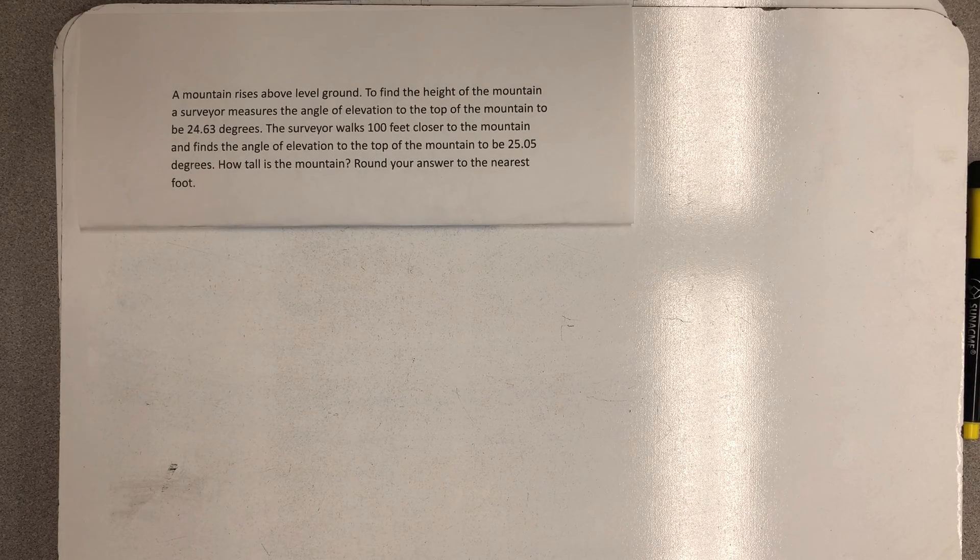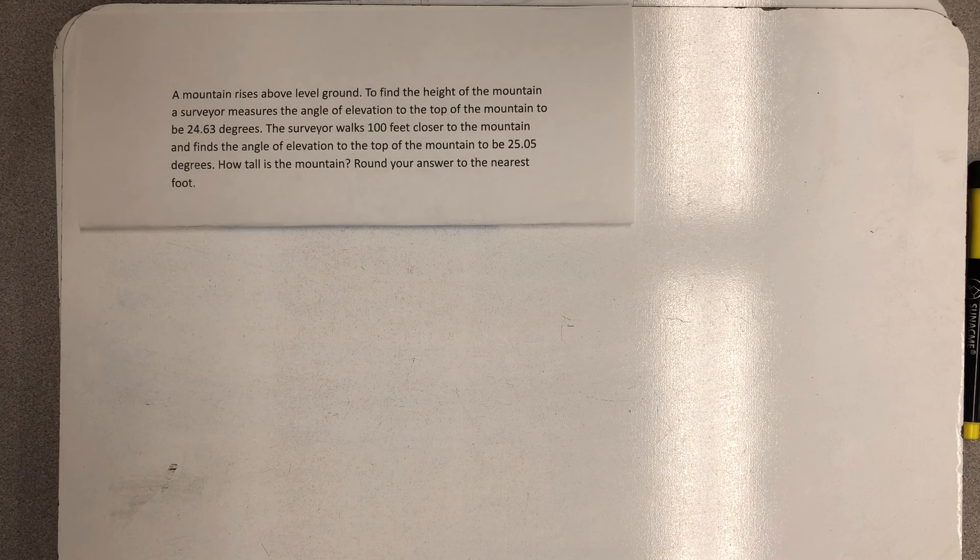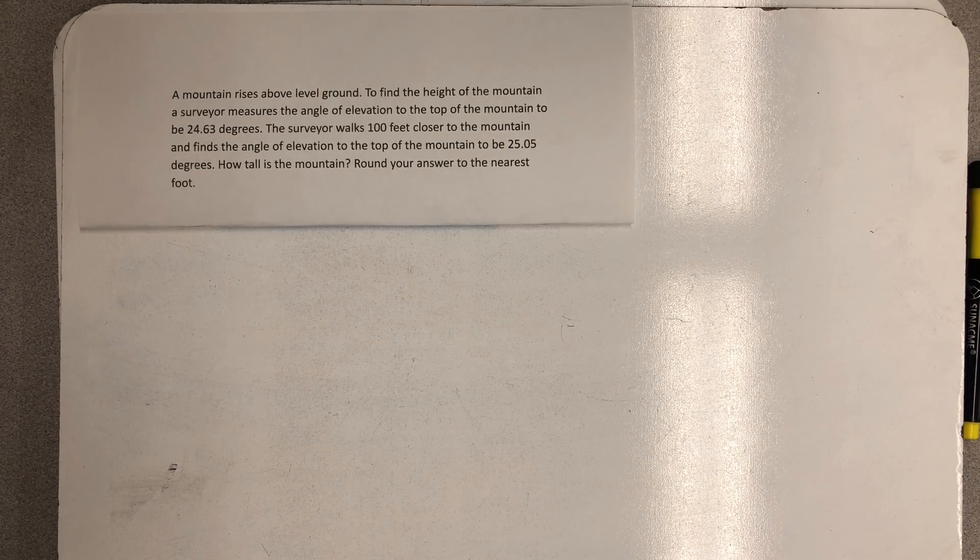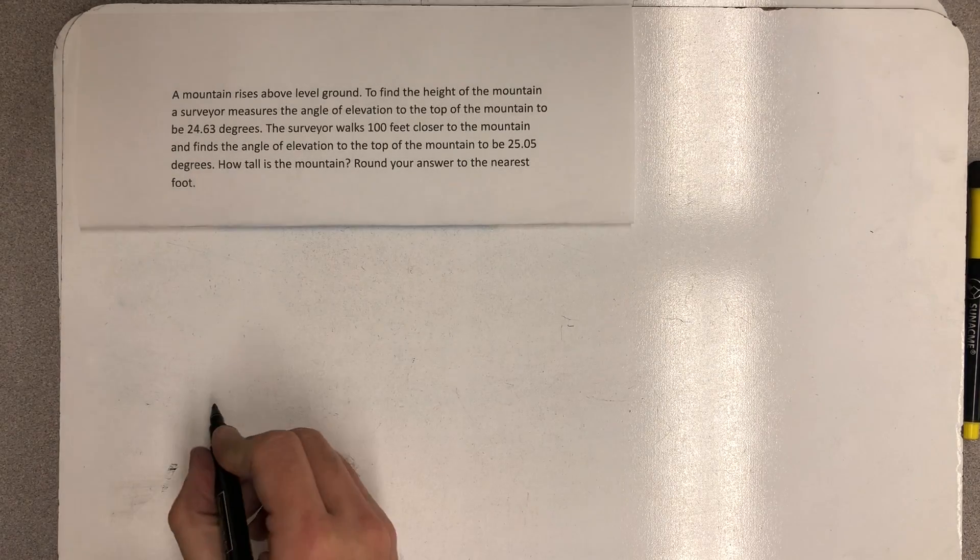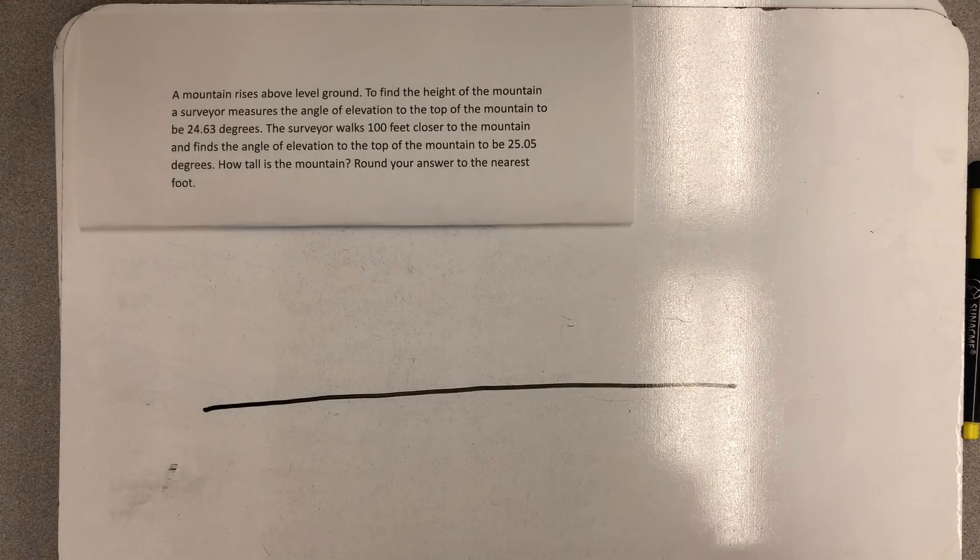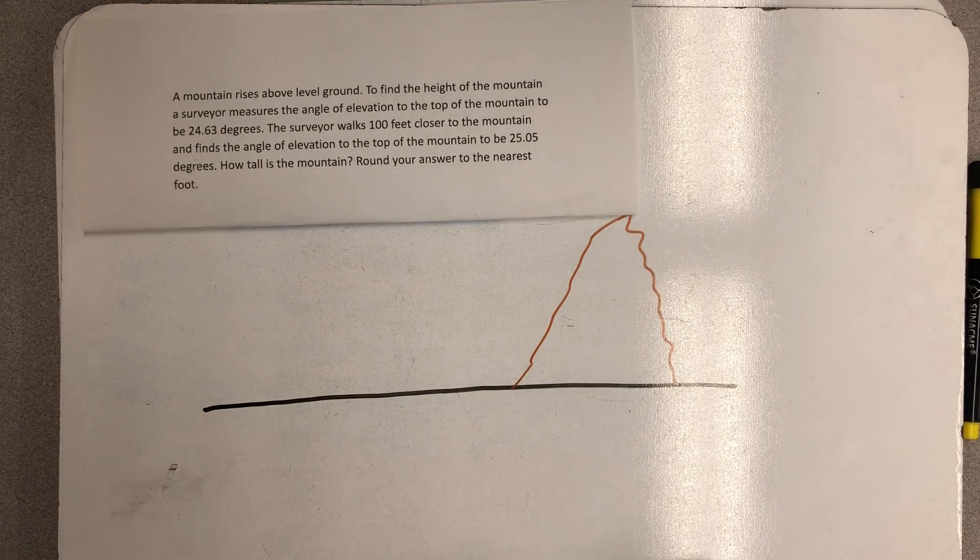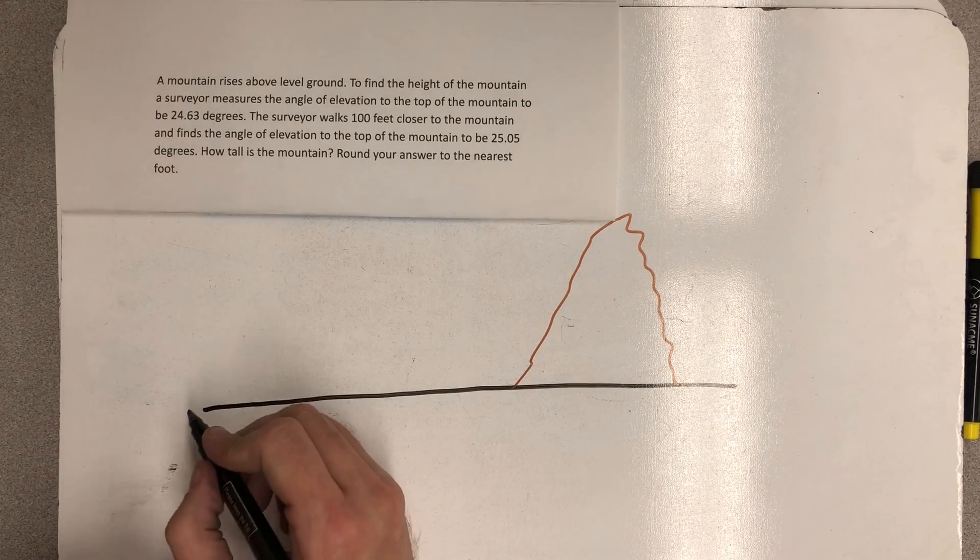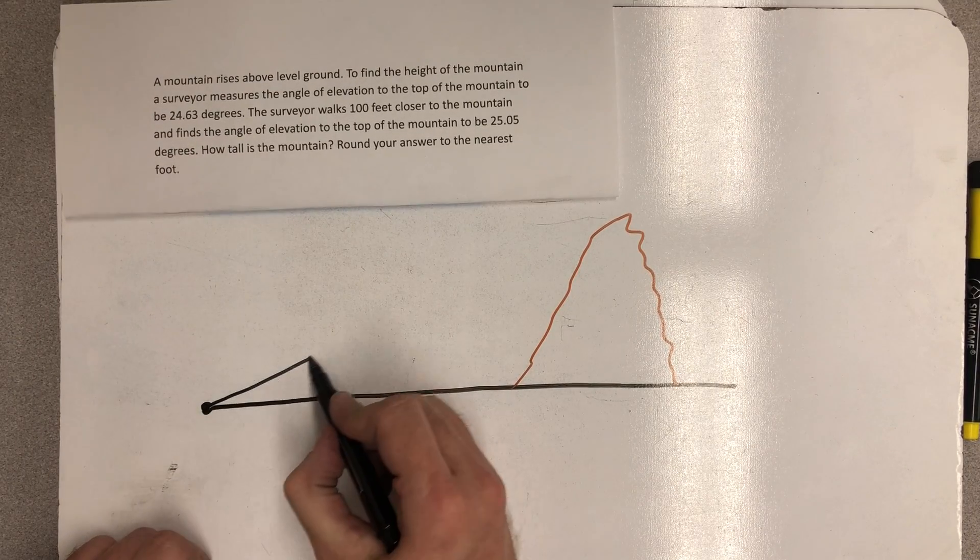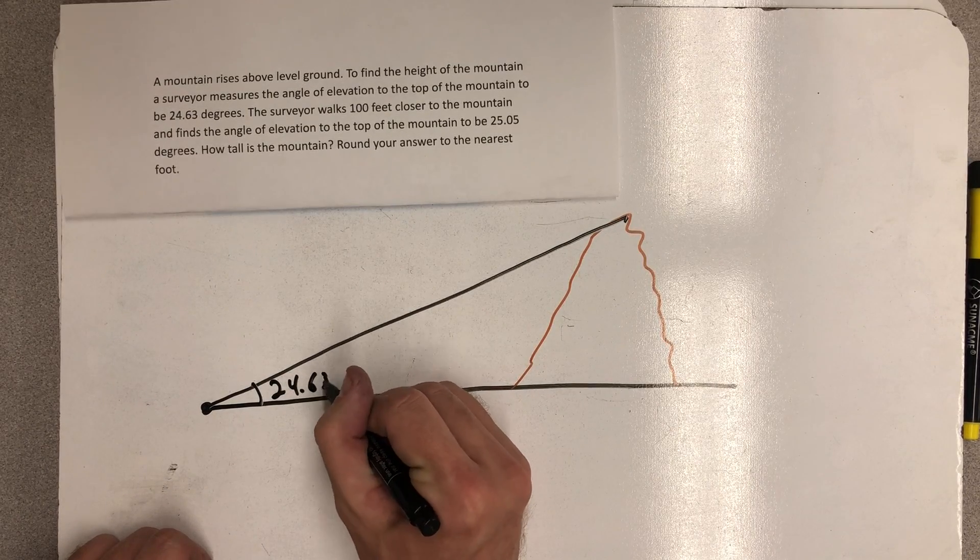A mountain rises above level ground. To find the height of the mountain, a surveyor measures the angle of elevation to the top of the mountain to be 24.63 degrees. So we're told we have this maybe kind of weird mountain that rises above level ground. And we have a surveyor that measures an angle of elevation from a spot somewhere out here to the top to be 24.63 degrees.